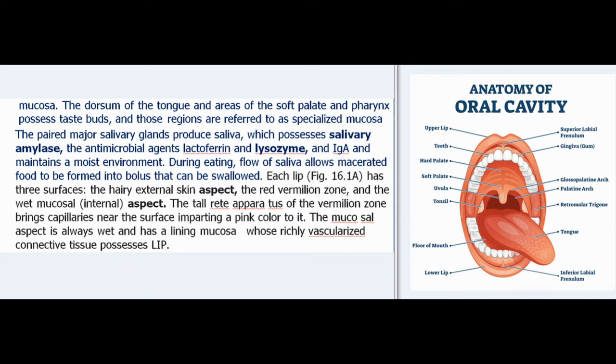The paired major salivary glands produce saliva, which possesses salivary amylase, the antimicrobial agents lactoferrin and lysozyme, and IgA, and maintains a moist environment during eating. Flow of saliva allows macerated food to be formed into a bolus that can be swallowed.